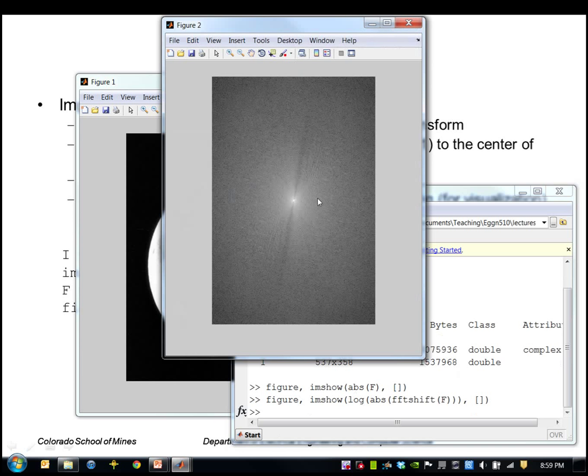So now we can see the DC, that high value, is directly in the middle of this transform. We can also see some values outside the middle here. So again, the middle represents zero frequency. As we move outward from the middle, we move to higher and higher frequencies.